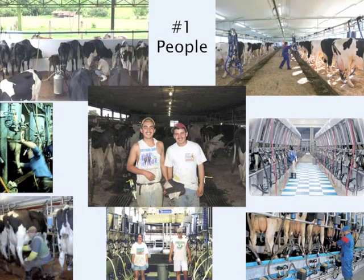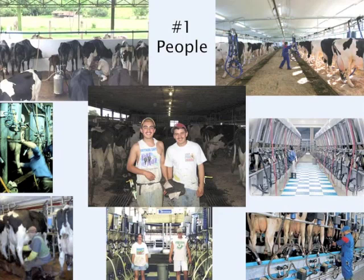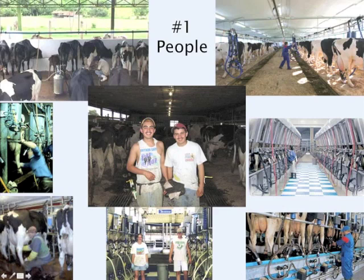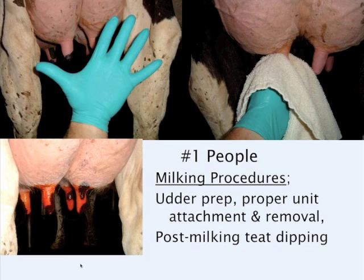Dry cows and heifers' environment is really important — a dirty environment leads to more problems with fresh cows. The people doing the milking are the most important factor. Wearing milking gloves, cleaning the teats off properly, and drying the teats well are critical. Handling cows in a low-stress environment is also important because oxytocin release is dependent on the cow being relaxed — if they tense up, they won't release the milk as well.